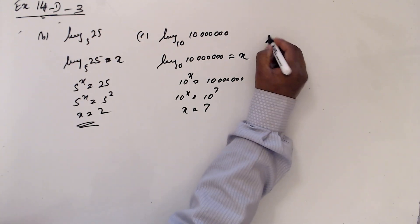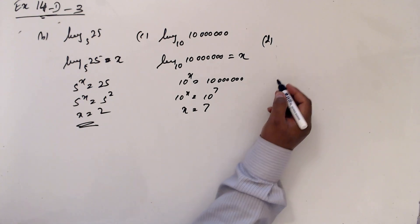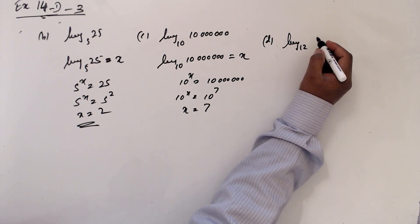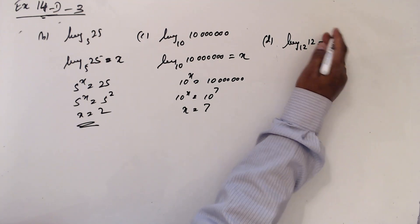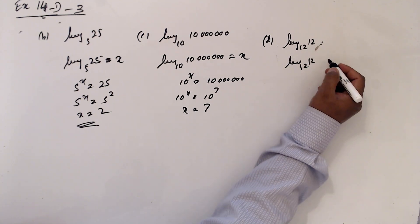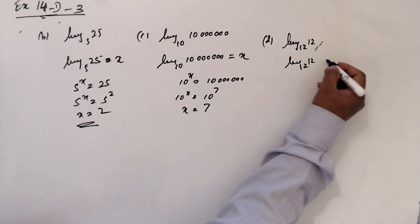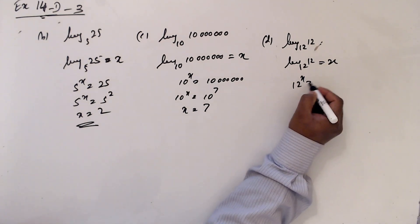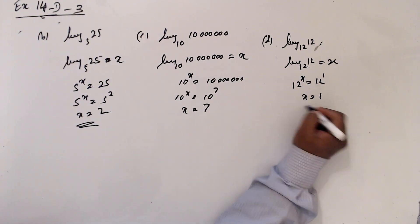And d: log base 12 of 12. 12 to the power x equals 12. So x is 1 — log base 12 of 12, let's take x. Then 12 to the power x is 12, which means x equals 1.